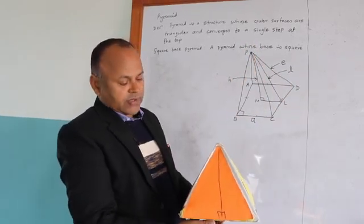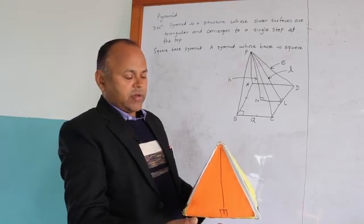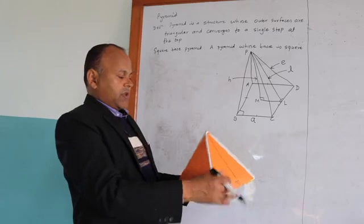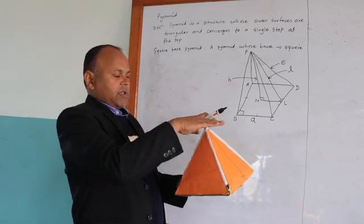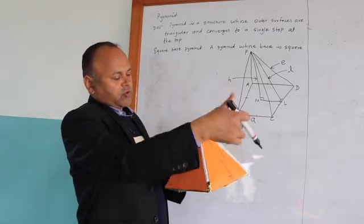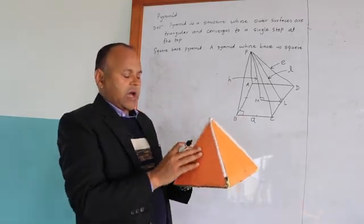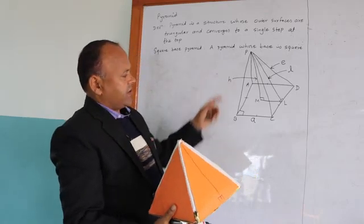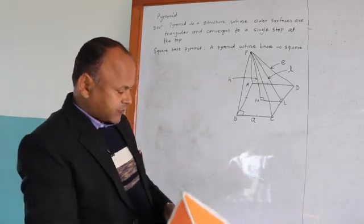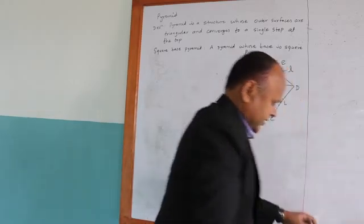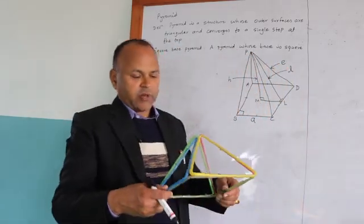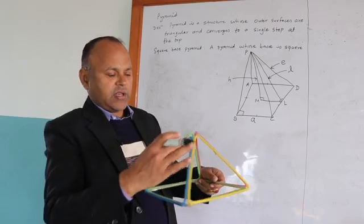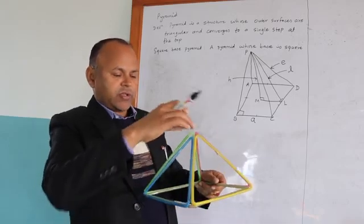We may measure the vertical height by keeping the pyramid on a plane. Another plane can be placed at the top, and the distance between the two parallel planes is the actual height of the pyramid, which is denoted by H. This is the net of the square based pyramid — it has a square base and four triangular faces.